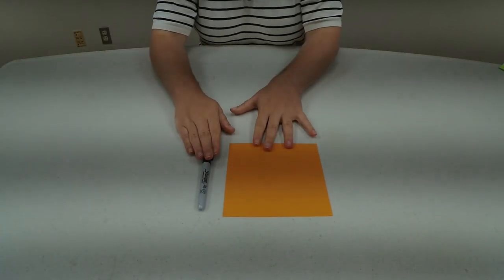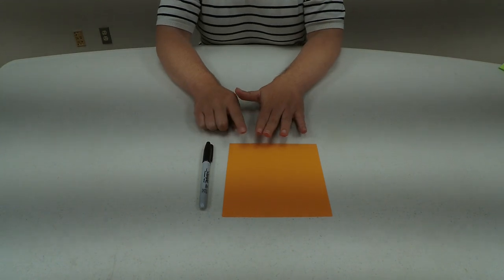So for this one, you're going to want a sharpie in addition to your origami paper.